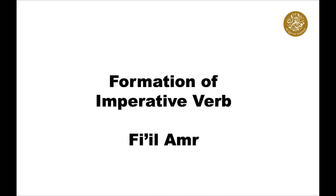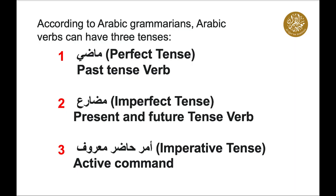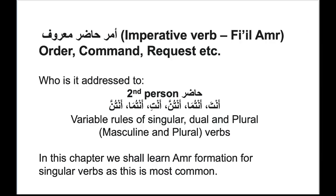A'udhu billahi minash shaytanir rajim. Bismillahir rahmanir rahim. According to Arabic grammarians, Arabic verbs can have three tenses. The imperative verb is used to make an order, command, request, etc. We need to know to whom the order or command or request is made through the imperative verb.